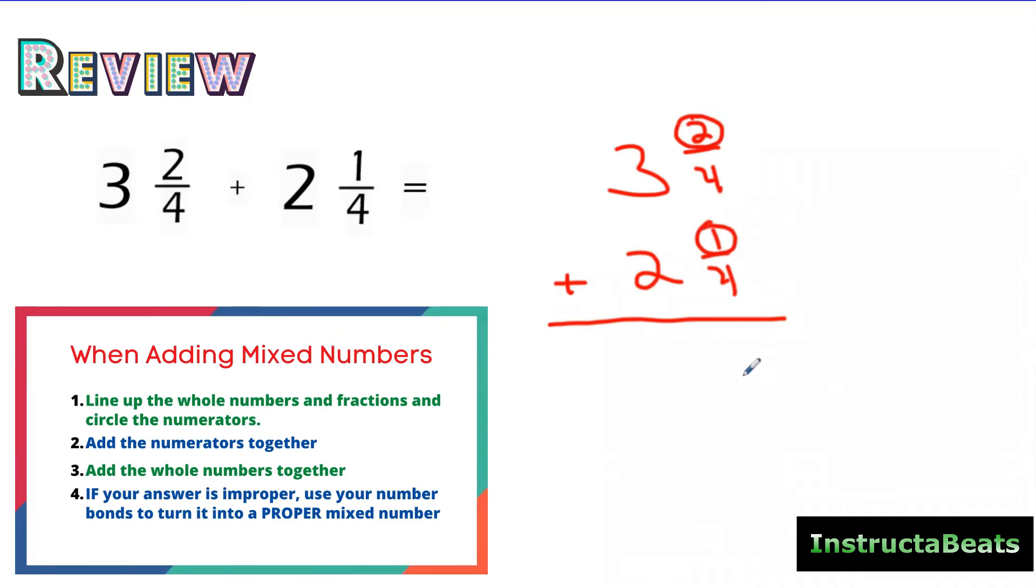And we're going to add those. Because 2 plus 1 is 3, my denominator stays the same, and then all I do is I add my whole numbers, and the sum of 3 2/4 plus 2 1/4 is 5 3/4.